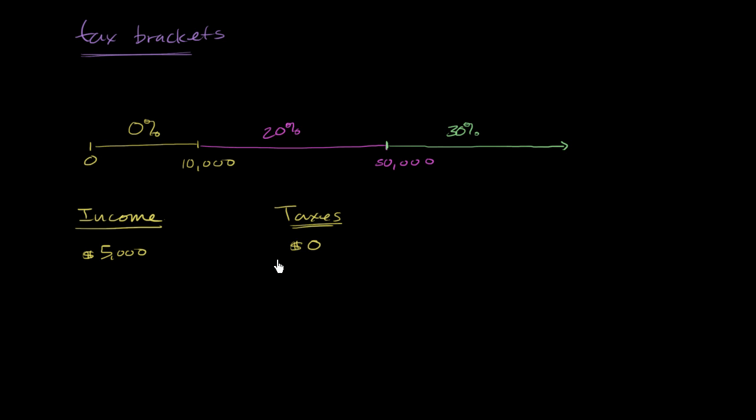Let's say someone has $15,000 in income. How much taxes would they pay? Well, they would pay 0% on the first $10,000, so it would be 0% times $10,000. And then the next $5,000, they're going to pay 20%. So plus 20% times the next $5,000.